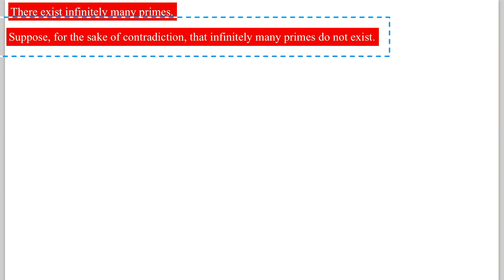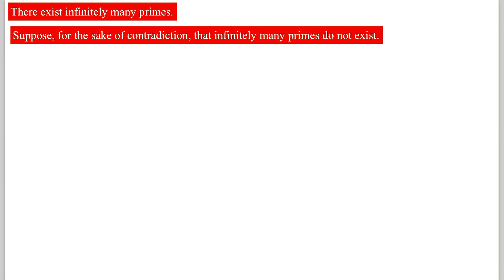Let me paste that assumption in here. So what we do is suppose, for the sake of contradiction, that infinitely many primes do not exist. That means that there exists only a finite number of primes, and we'll say that that number is n. So there exists only n primes.